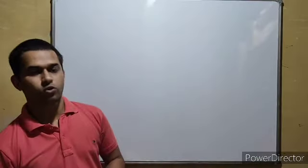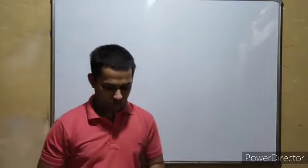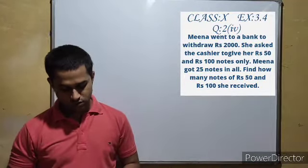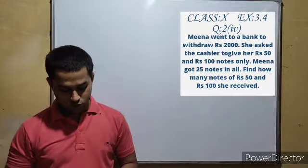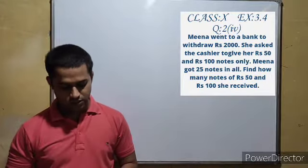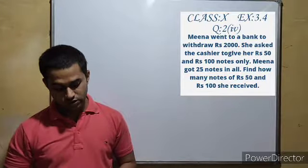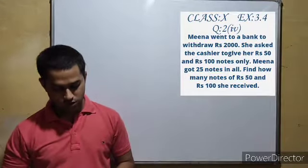Exercise 3.4, question number 2, part 4. Meena went to a bank to withdraw rupees 2000. She asked the cashier to give her rupees 50 and rupees 100 notes only. Meena got 25 notes in all. Find how many notes of rupees 50 and rupees 100 she received.